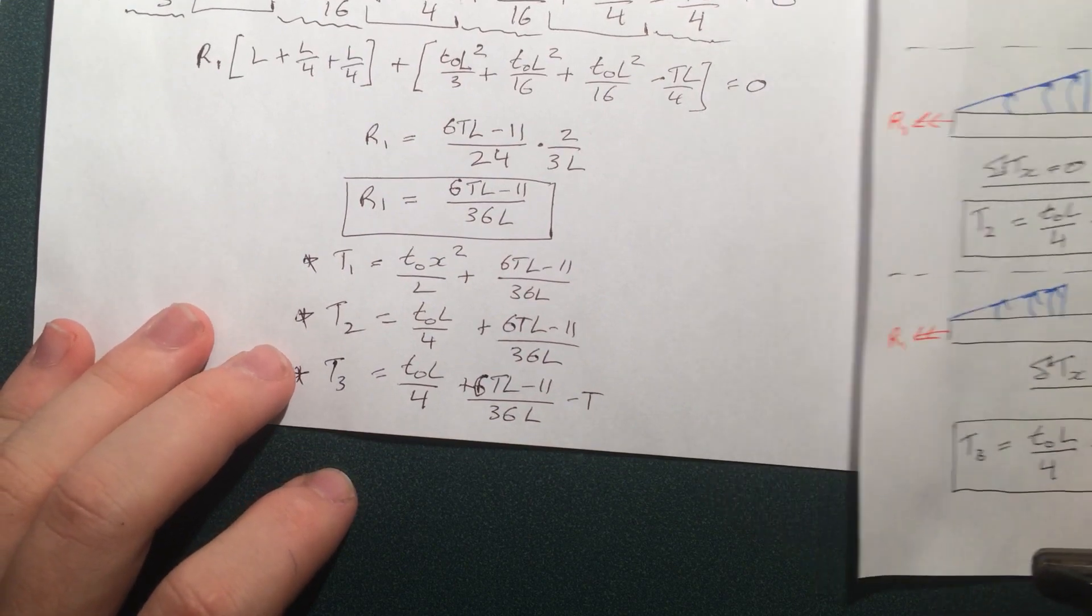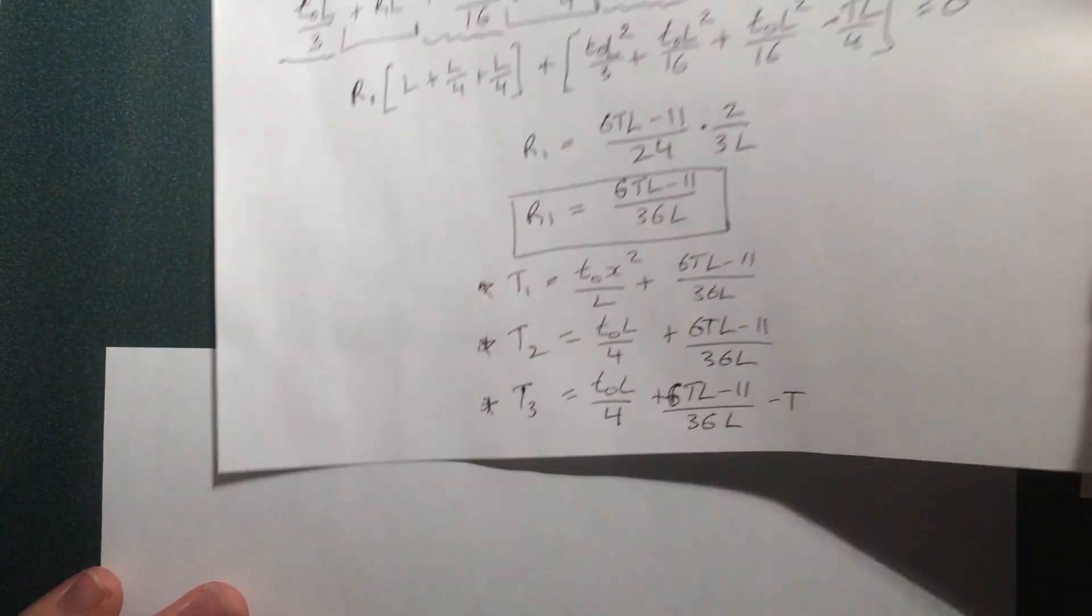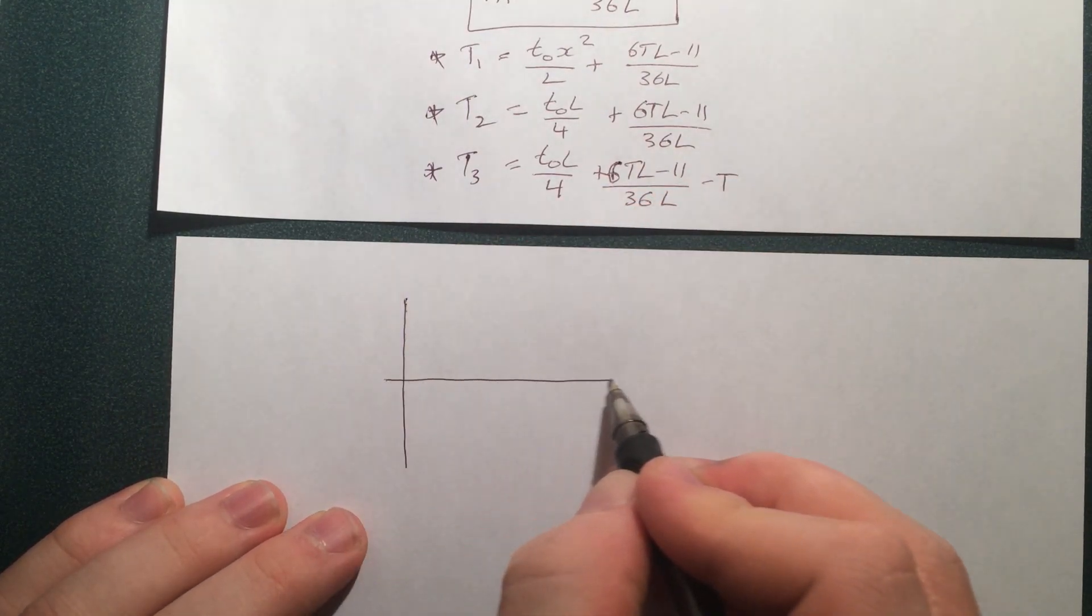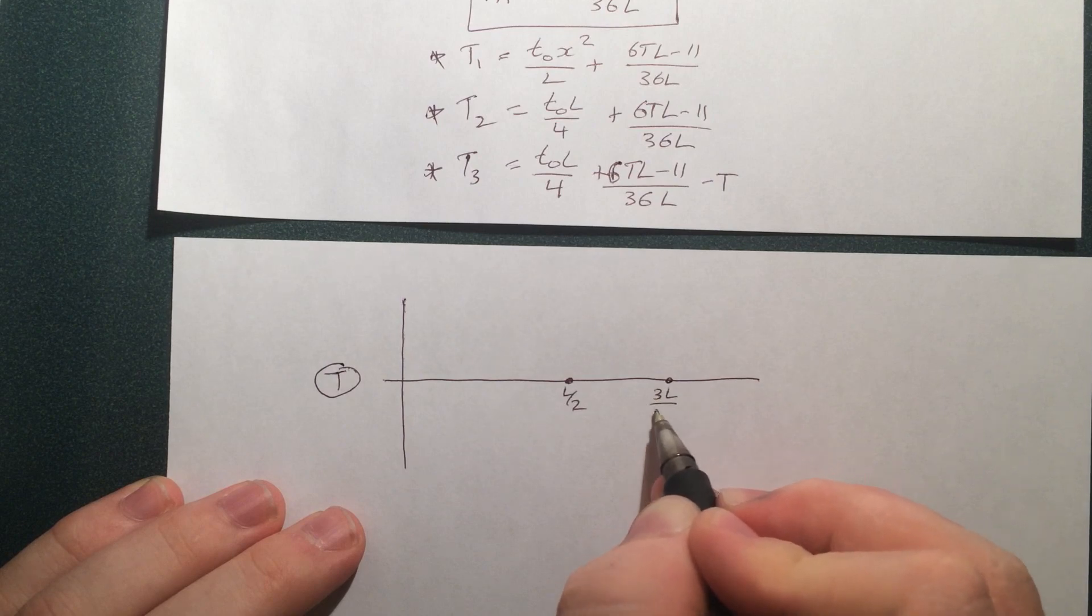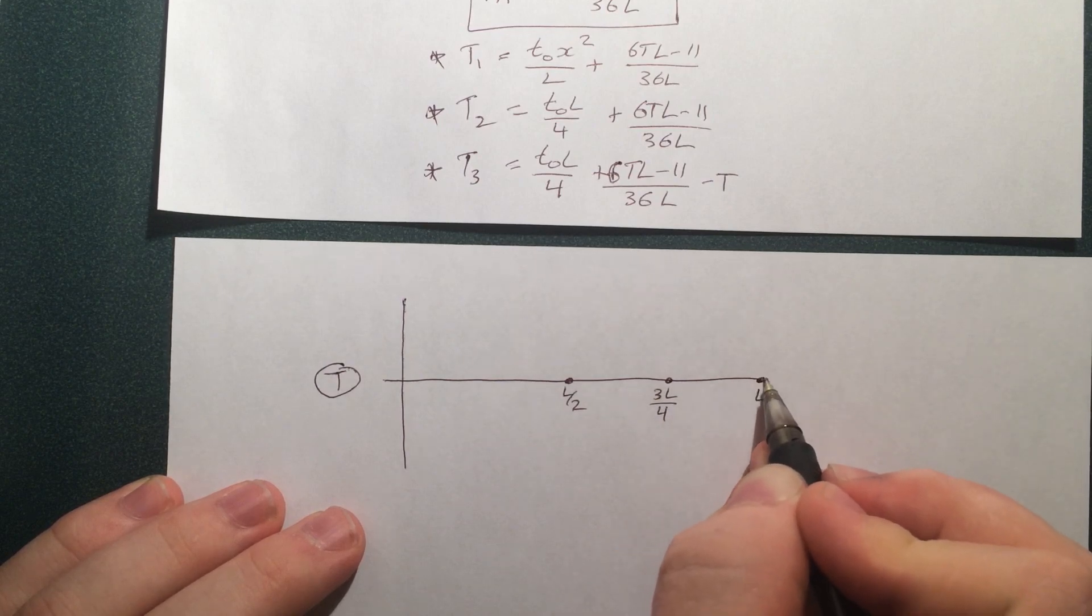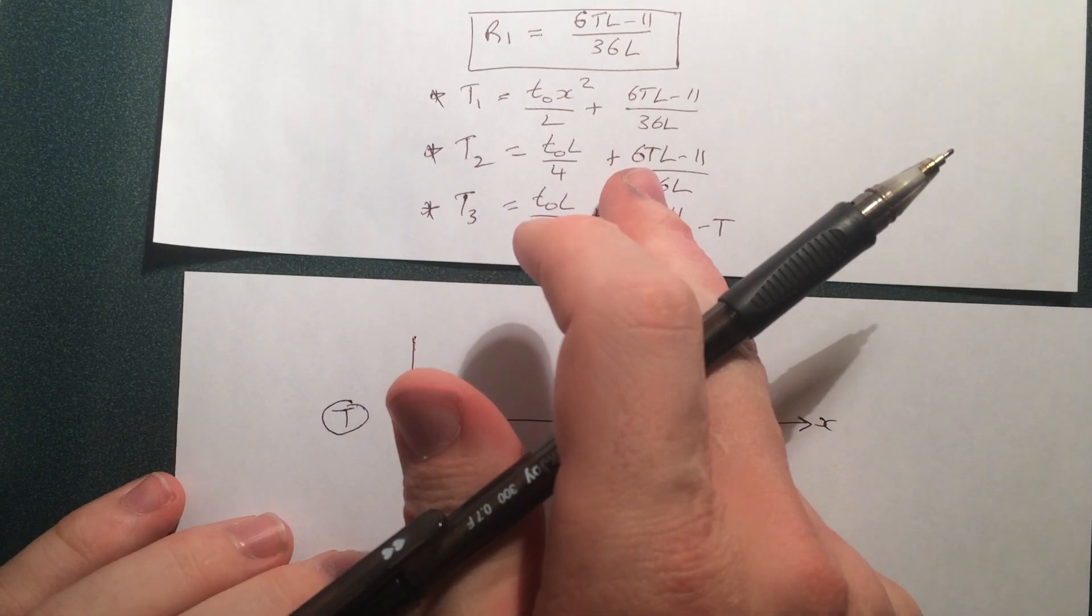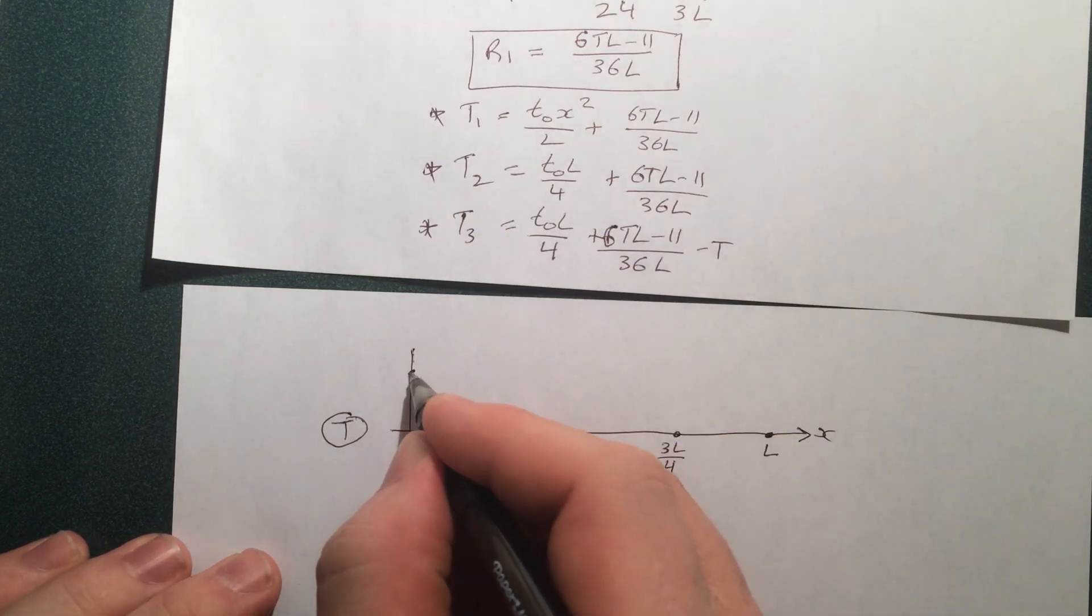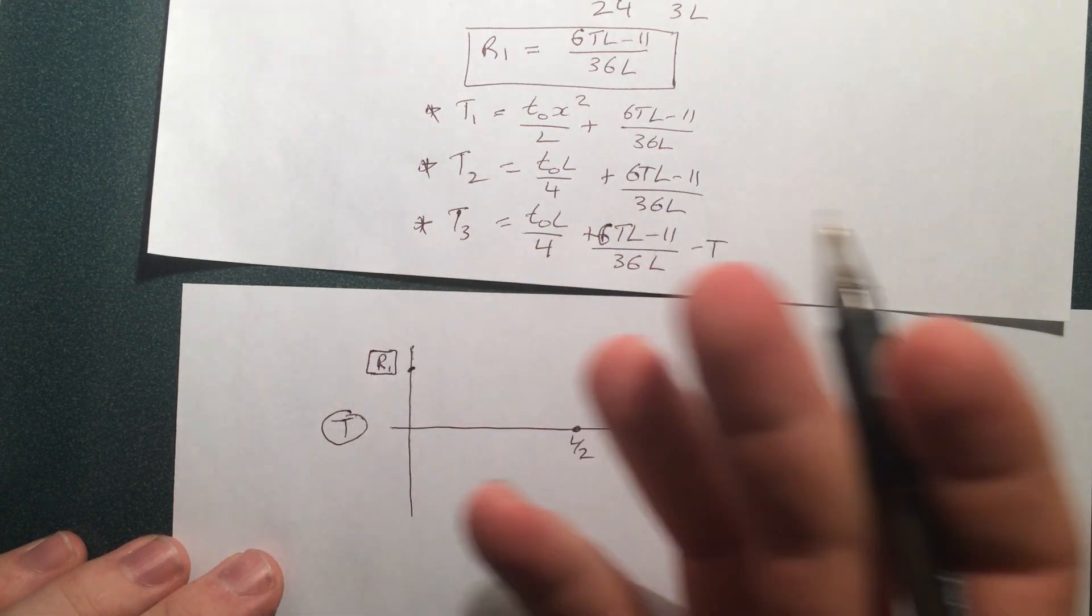Now let's go to plot these. Which is what we're required to do when the question first began here. So T in the first section can be described by this equation here. So when x is zero, we basically just have this bit of the equation, the reaction. I'm just going to call it the reaction because I don't feel like writing out this whole mess here. That makes sense. If we go right to the base, the only thing that we should have in torque is the reaction.